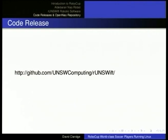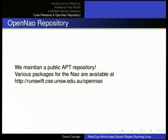The competition encourages open-source collaboration by asking teams — especially successful ones — to publish their source code. Every year, the starting point is the previous year's winners. Our most recent software from Singapore, where we came second, is on GitHub at github.com/UNSWComputing/RunSwift. The winning team, B-Human from Germany, also published their code. We also maintain a public apt repository for the NAO — and take requests if people want something packaged that isn't available from Aldebaran — so you can add our repository to your sources.list and get access to additional packages.